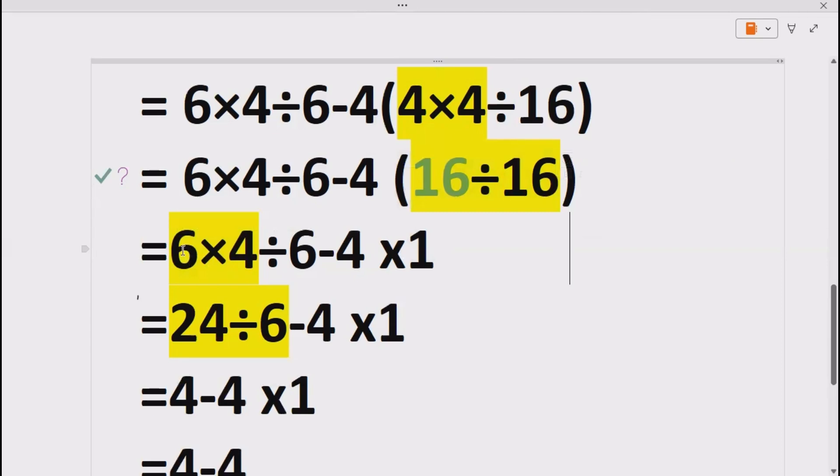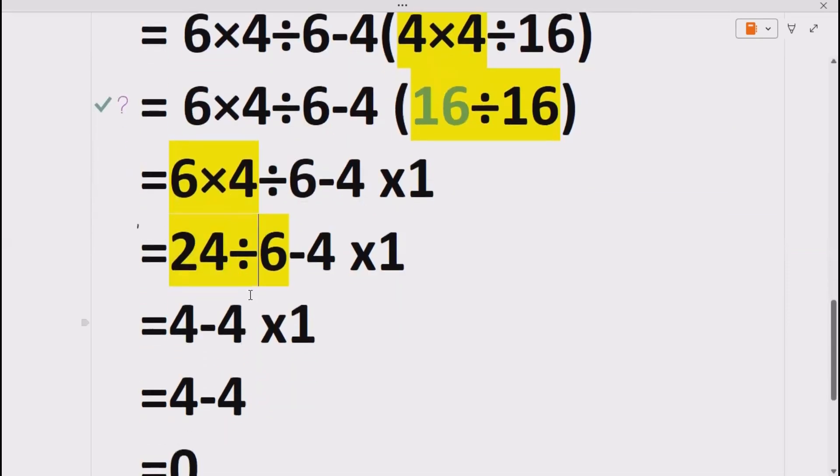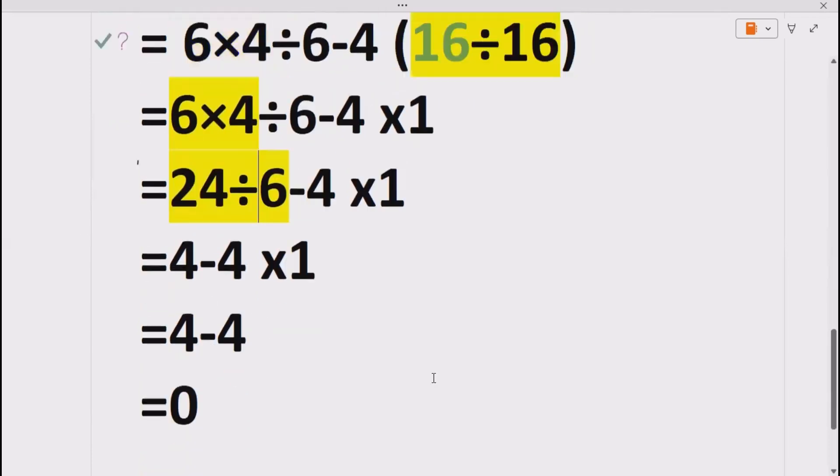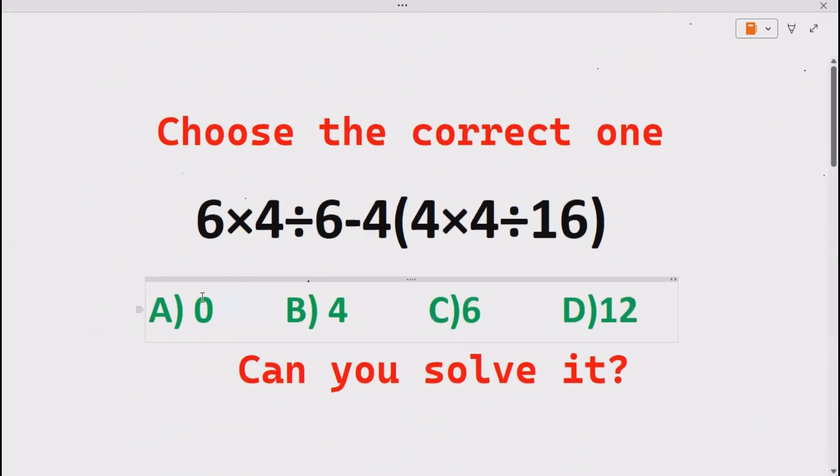We have 24÷6-4×1. 24÷6 gives us 4, minus 4×1 is 4. So 4-4 gives us 0. It means our solution is part A, which is 0.